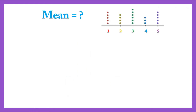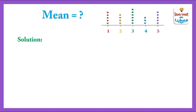We are going to find the mean using the Dot Plot. As you can see, different numbers are written below the dots. 1 is written below 5 dots, 2 is written below 4 dots, 3 is written below 6 dots, 4 is written below 3 dots, and 5 is written below 5 dots. To find the mean, we will add the numbers according to their dots.